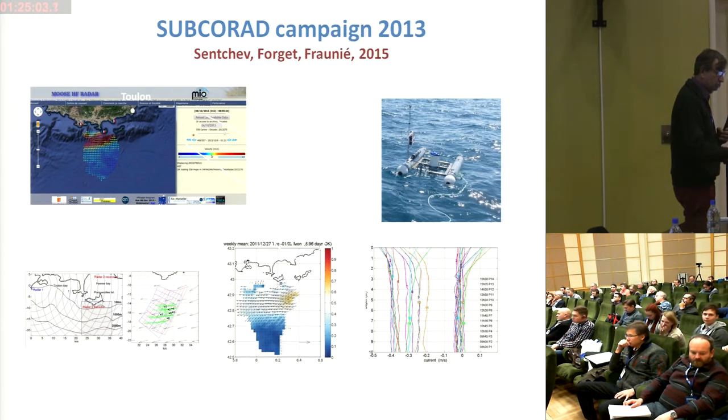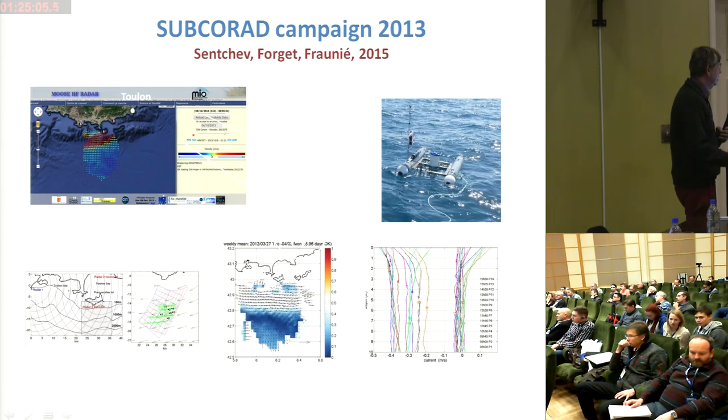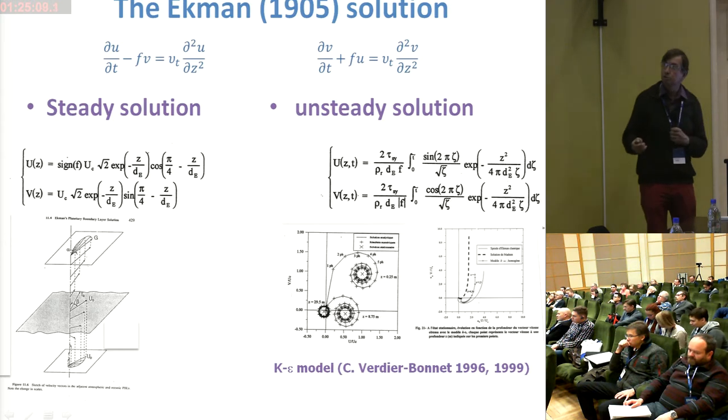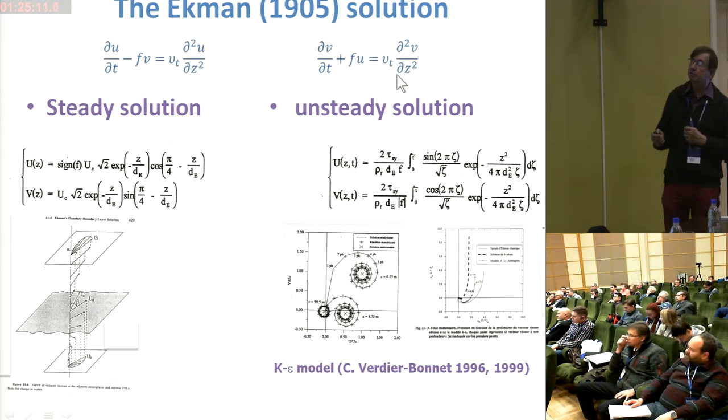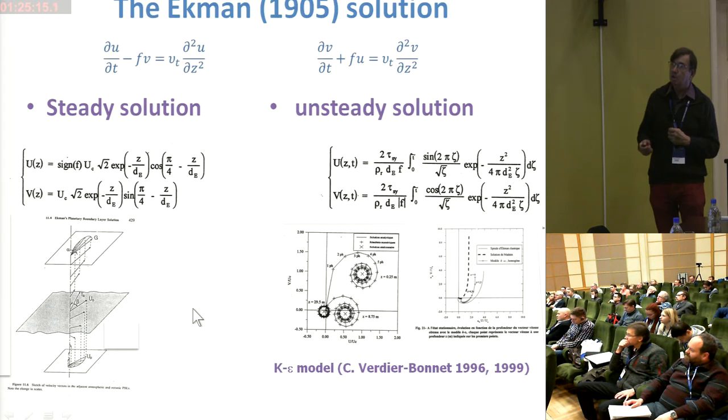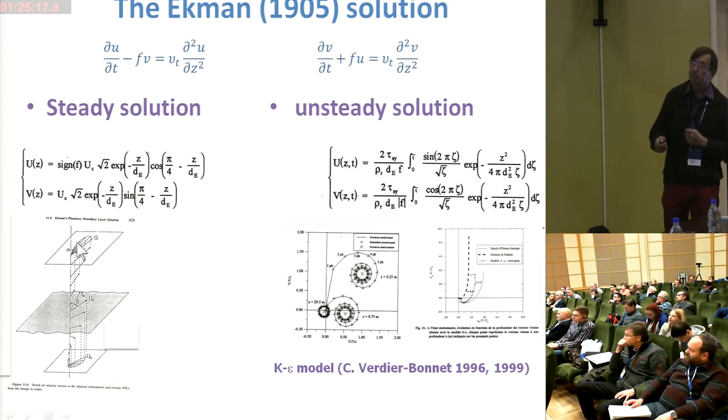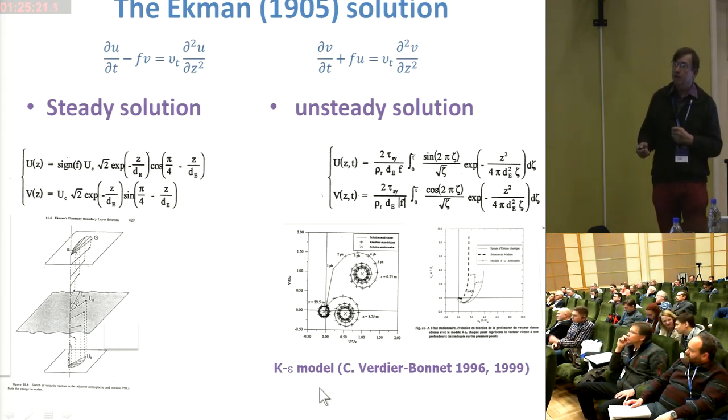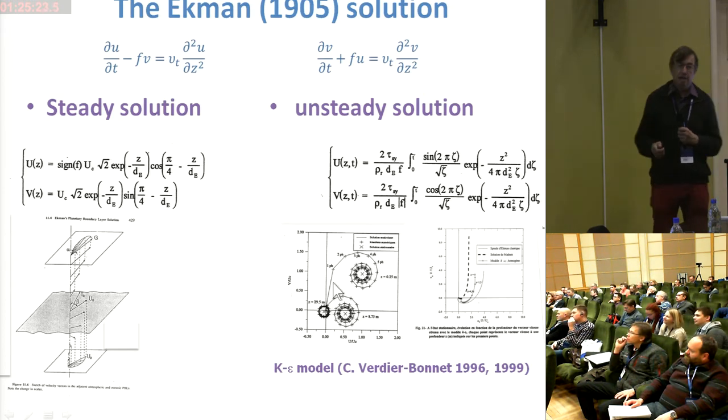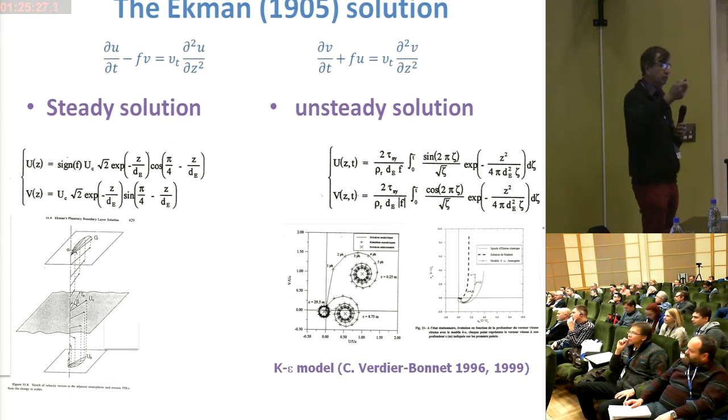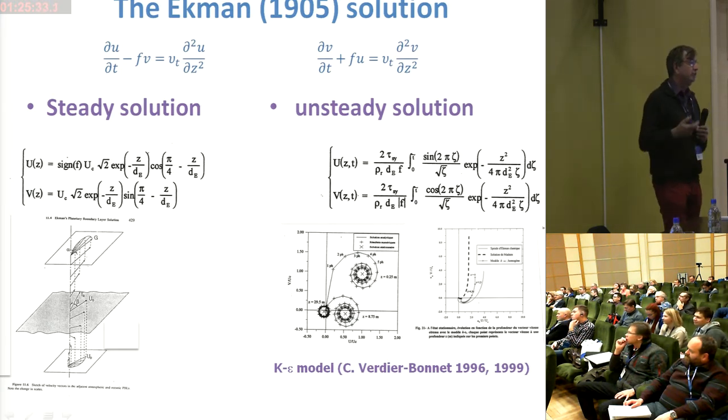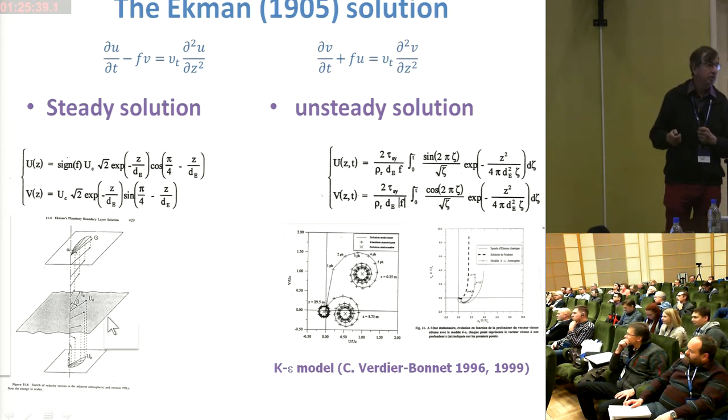So this is very comparable to the classical Ekman model, especially the unsteady solution. This unsteady solution, in fact, describes the formation of this classical Ekman layer combined with some inertial motion. And what is important is the velocity of rotation and the velocity of deepening of this layer is depending on eddy viscosity. So the main idea is to get from this kind of profiles some estimates of eddy viscosity coefficient in this 3D surface layer.